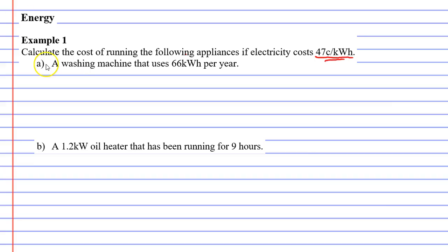We'll start with question A. We've got a washing machine that uses 66 kilowatt hours per year, and we learned that you pay 47 cents for each kilowatt hour. So really all you need to do is just multiply them together. Except I want to change one thing, and that is instead of 47 cents, I want it in dollars. So I want 0.47 dollars per kilowatt hour.